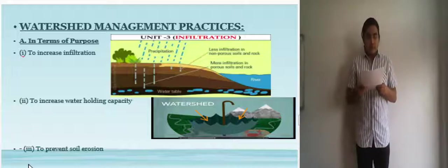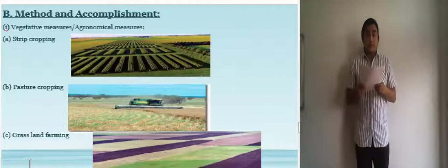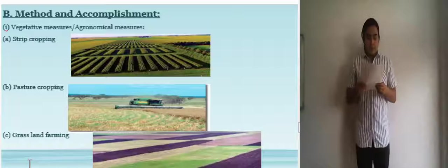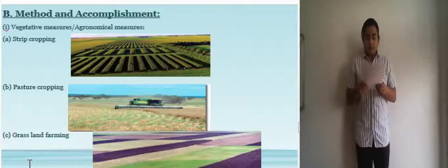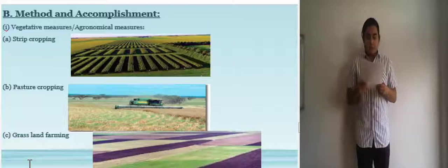The second is in the method and accomplishment. Vegetative measures and agronomical measures. The first one is strip cropping. Used when a slope is too steep or when there is no alternative method of preventing soil erosion. A method of farming which involves cultivating a field partitioned into long narrow strips which are alternated in a crop rotation system.